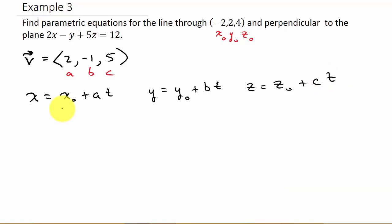Alright, so now just plug everything in. x equals x₀, which is -2, plus a, which is 2t. So x = -2 + 2t.